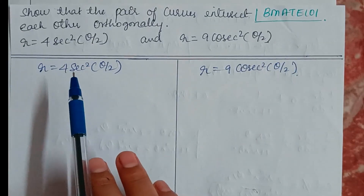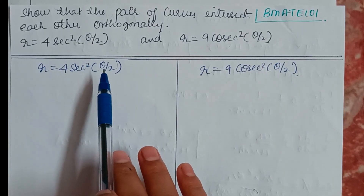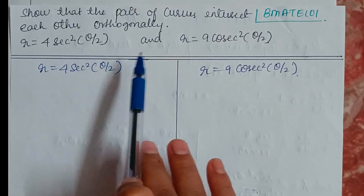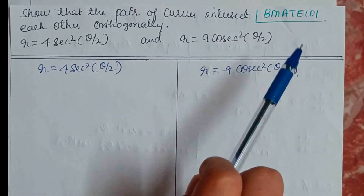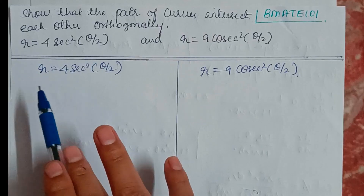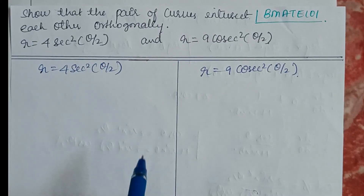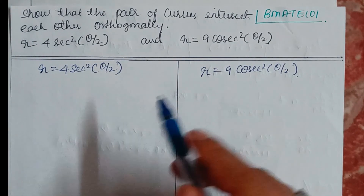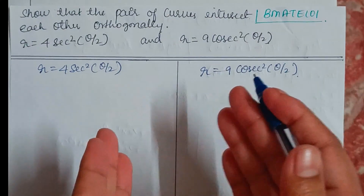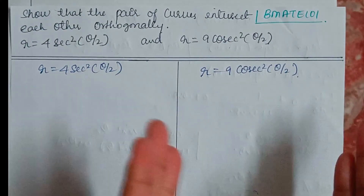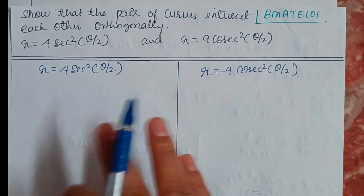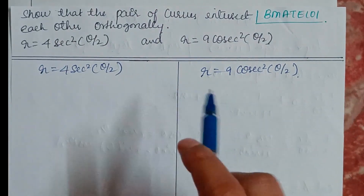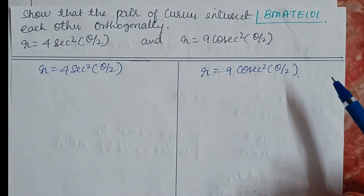The curves are given as r equals 4 secant squared (θ/2) and r equals 9 cosecant squared (θ/2). We need to show that these curves intersect each other orthogonally.